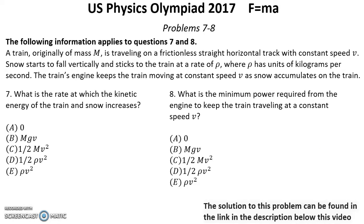Problem number seven and eight. The following information applies to questions seven and eight. A train originally of mass M is traveling on a frictionless straight horizontal track with constant speed v. Snow starts to fall vertically and sticks to the train at a rate of rho, where rho has units of kilograms per second. The train's engine keeps the train moving at constant speed v as the snow accumulates on the train.